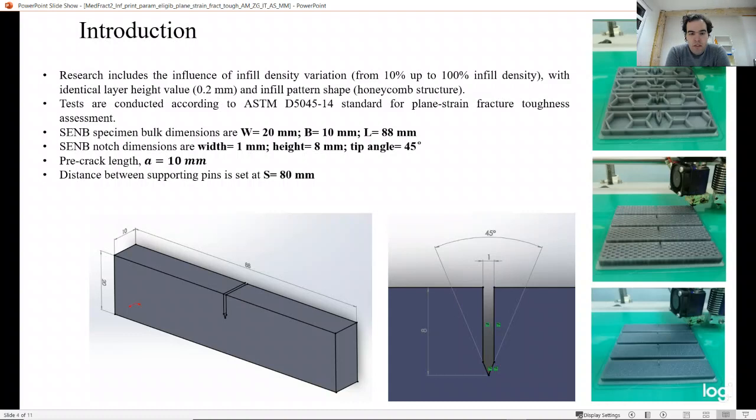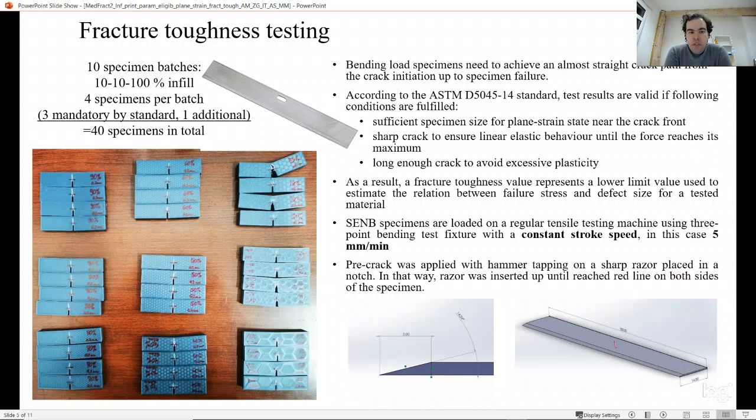The CAD model of our specimens is shown in the pictures below. Here you see all the mentioned dimensions. On the right-hand side, you see these SENB specimens during 3D printing. On the picture above you see a 10% infill density batch, the lowest infill density. In the middle you see 50%, and below is the full infill density batch. We used 10 specimen batches with different infill densities, so that is 10 times 4 specimens per batch. We needed 3 specimens as mandatory defined by standard, and we used one additional replacement specimen, so in total we have 40 specimens.